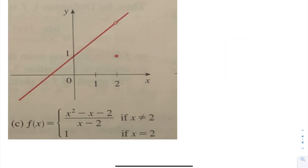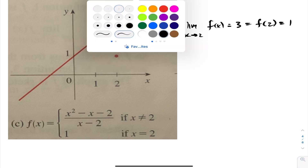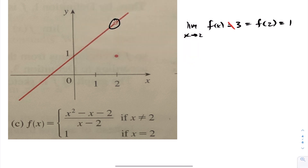For this adjusted example, there is still that hole, but now a point is actually defined at x equals 2. So the function does exist at 2. However, taking the limit as x approaches 2 gives a value of 3, while the function at 2 equals 1. Because the limit does not equal the function value, we again have a point of discontinuity at x equals 2.